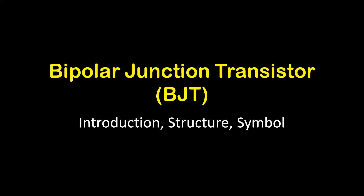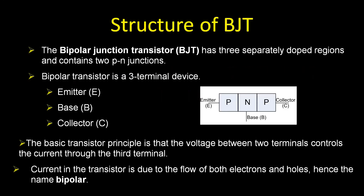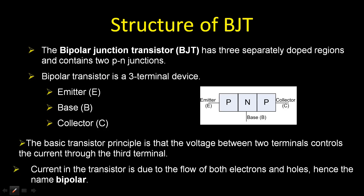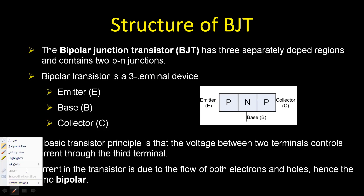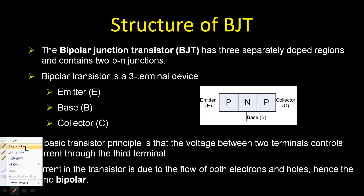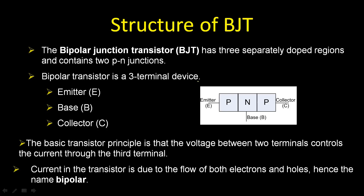A bipolar junction transistor, or BJT, is one of two main types of transistors — the other being the field effect transistor, or FET. The BJT consists of two PN junctions, unlike a PN junction diode which has only one. It has three terminals: emitter, base, and collector, whereas a diode has only anode and cathode terminals.